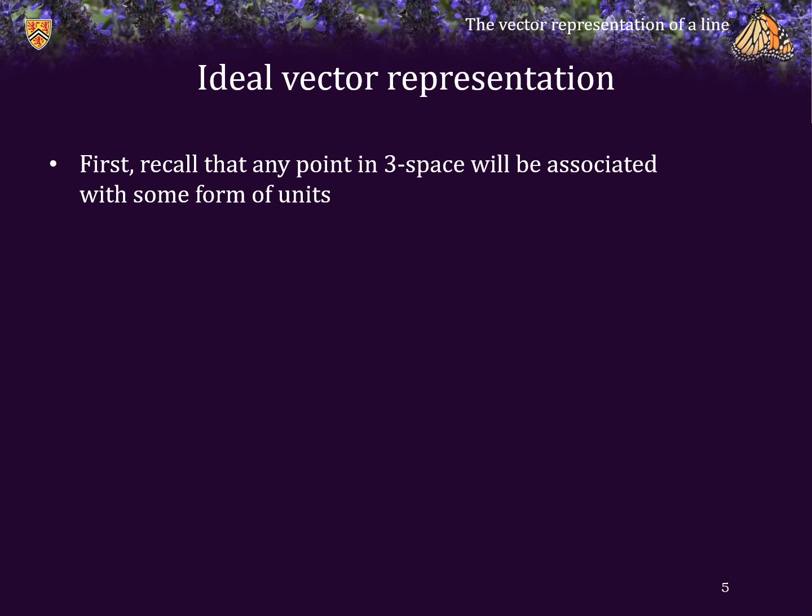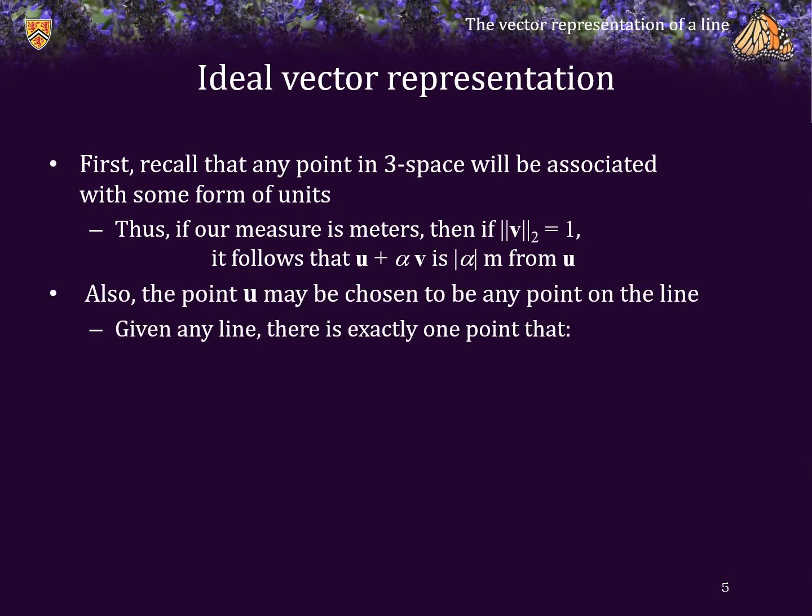First, recall that any point in three-space will be associated with some form of units, say meters. If our measure is in terms of meters and it happens that the two-norm of the vector v is equal to one, that immediately follows that the point u + αv is the absolute value of α meters away from the point u. Also, the point u may be chosen to be any point on the line.